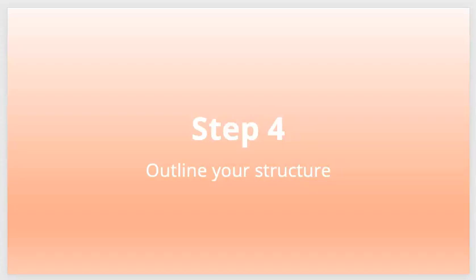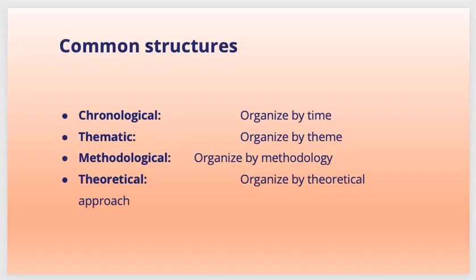Step four is to outline your structure. A literature review follows the basic structure of most academic writing: it has an introduction, a body, and a conclusion. There are many different ways to organize the body. Common structures include: chronological — organized by time; thematic — organized by themes; methodological — organized by the different methods adopted; and theoretical — organized by the theoretical approach adopted in different literature.